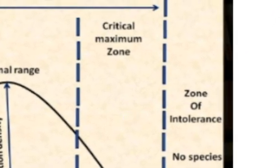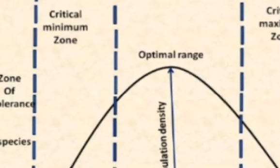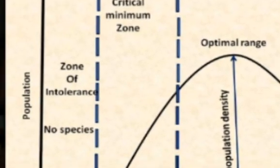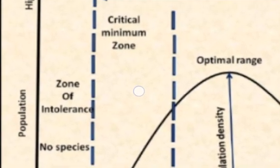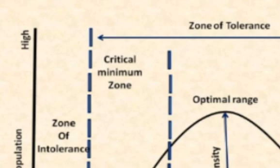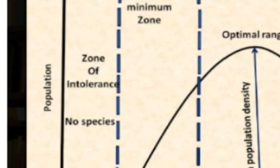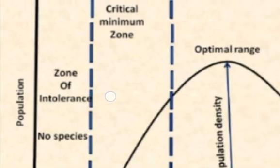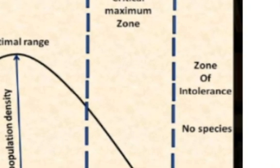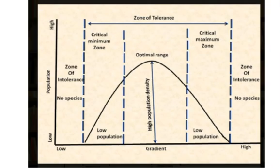Above the critical maximum zone, the rate of biological processes will begin to decline. In the outer zones — both below the critical minimum zone and above the critical maximum zone — are the zones of intolerance, where biological processes are not allowed to take place. I hope you understood all these terms.